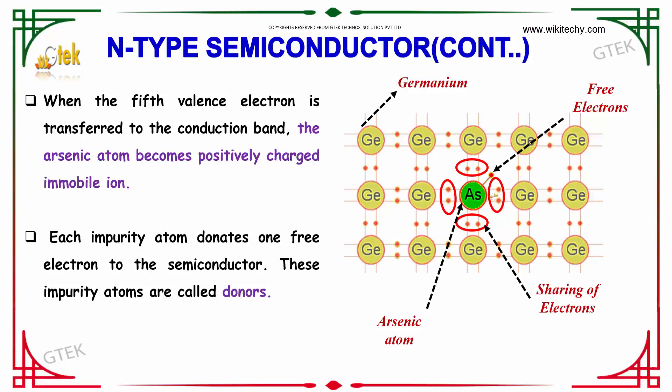You can see that it forms a covalent bond — a sharing of electrons. Each impurity atom donates one free electron to the semiconductor. These impurity atoms are called donors.